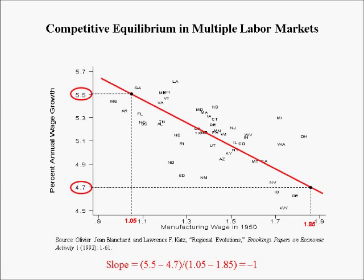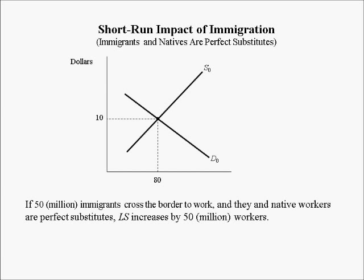Now let's look at immigration in more depth. If 50 million immigrants cross the border and they and native workers are perfect substitutes — meaning we're talking about low-skilled workers — the labor supply increases by 50 million workers. So the labor supply curve moves to the right horizontally by 50 million. This has an immediate impact on the wage in low-skilled labor markets: the wage drops from $10 an hour to $7 an hour. And everybody talks about how bad this is — but again, everybody's trapped in the short run.